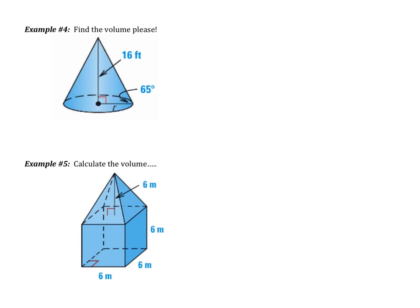Find the volume, please. I'm going to do this one with you, and then let you do the next one on your own. This is a cone, so the volume is going to be one-third the area of the base multiplied by the height. The height is 16. The base is a circle, so I'm going to have to do pi r squared, but I don't know r. However, I do have an angle that's 65 degrees, so I have a right triangle where I know one side and one angle — that should set off SOHCAHTOA.